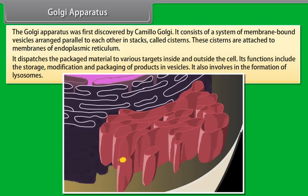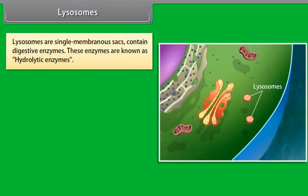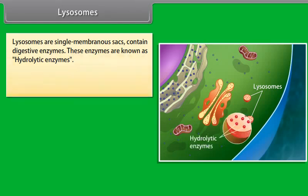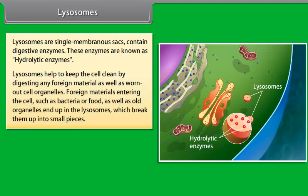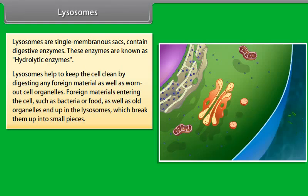The Golgi apparatus was first discovered by Camillo Golgi. It consists of a system of membrane bound vesicles arranged parallel to each other in stacks called cisterns. These cisterns are attached to membranes of the endoplasmic reticulum. It dispatches the packaged material to various targets inside and outside the cell. Its functions include the storage, modification, and packaging of products in vesicles. It also involves the formation of lysosomes.